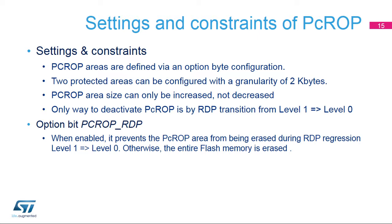The data bus cannot access that flash memory. Once the development phase is completed, the PC-ROP can then be turned into an RDP setting, level 1. In this case, the external world is limited to read-only, but the PC-ROP settings for specific sectors still apply to all masters trying to read that code.